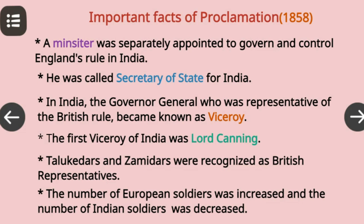The first Viceroy of India was Lord Canning. Talukedars and Zamindars were recognized as British representatives. The number of European soldiers was increased and the number of Indian soldiers was decreased.